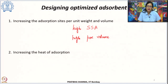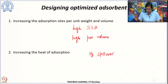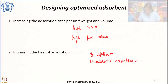Another thing we can do is increase the heat of adsorption of the adsorbent. This can be done through different ways: by either introducing the hydrogen spillover effect, or by having unsaturated adsorption sites, or by constructing materials such that they have narrow pores — very small sized pores where the adsorption potential can be increased.